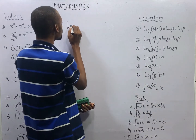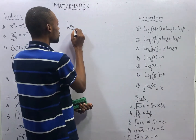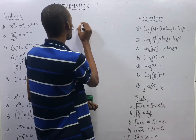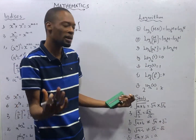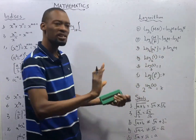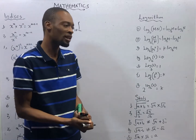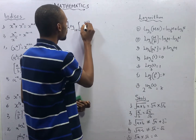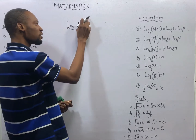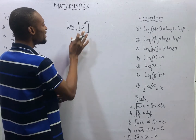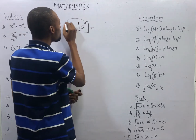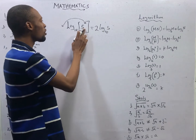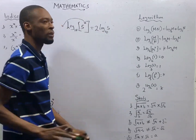The third law: if you have log to base 10 of m raised to the power of k — let's say m is 5 and k is 2 — which means we have log 5 squared with base 10. Logarithms say that anytime you see something like this, break down the power to give you 2 log 5 to base 10. So when you have a log raised to the power of something, bring out the power. That is the third law.